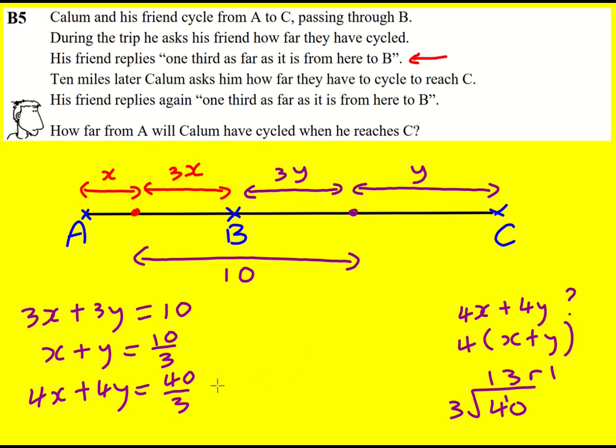So 4x plus 4y is going to be 13 and a third miles. That is the total amount.